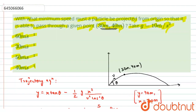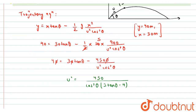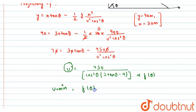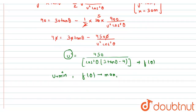Now, we have to find the minimum speed in order for the particle to cross this point. To minimize u², we need to maximize the denominator. Let the denominator be f(θ). So for u to be minimum, we must keep f(θ) at its maximum value. To find the maximum of f(θ), we differentiate it.